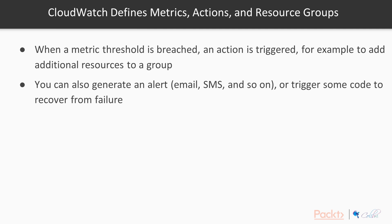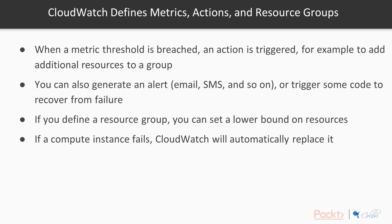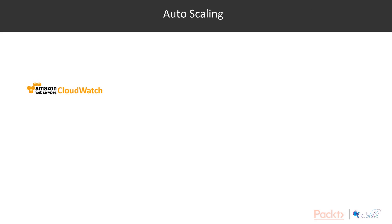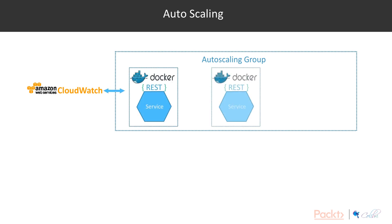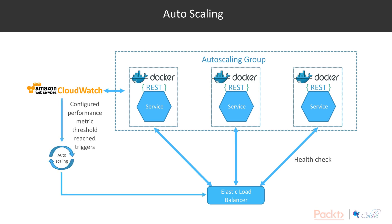If you define a resource group you can set a lower bound on resources, so if a compute instance fails CloudWatch will automatically replace it. Likewise if an availability zone fails, CloudWatch will automatically replace failed hosts with new ones in another availability zone within the same region. So how does autoscaling work? This is one of the most clever things about cloud computing, and one of the things people get really excited about when moving their applications to the cloud.